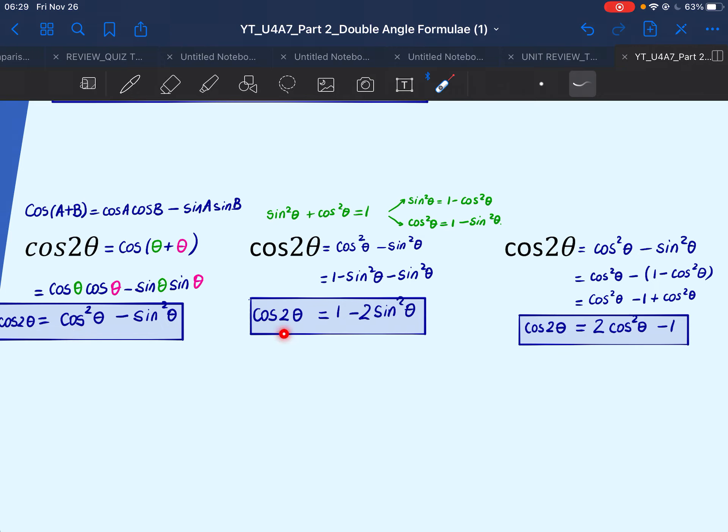If you want to use the second formula, all you need is the sine of theta. So only one piece of information. And if you're using cos 2 theta equals 2 cos square minus 1, you only need to have cosine theta. Again, one piece of information.